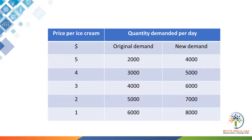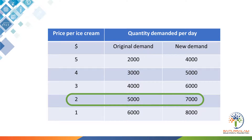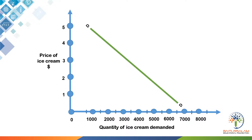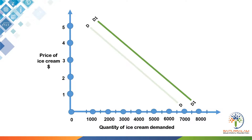The table shows that at any given price, a larger quantity is demanded. At a price of $2, for instance, initially 5,000 ice creams would be demanded a day. Hot weather, for example, would have encouraged people to buy more ice creams. Demand would increase to 7,000. On a diagram, an increase in demand is shown by a shift to the right of the demand curve — a shift from D to D1.